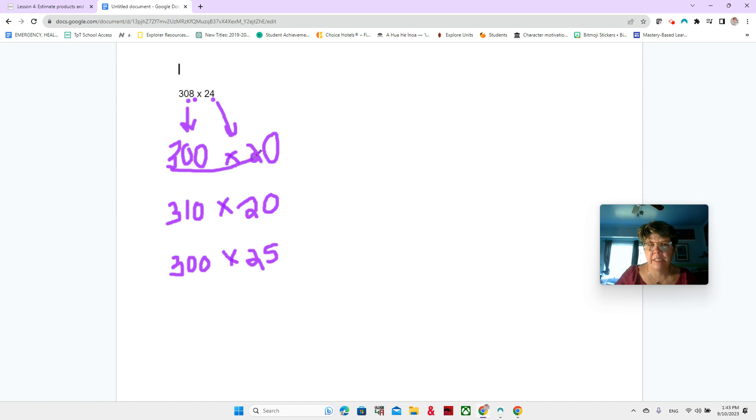Okay. So here we have three times two, which is six. And then we can just bring all three zeros over. Do you see the three zeros, two zeros on one and one more zero. So that would be 6,000. Not a bad estimate.